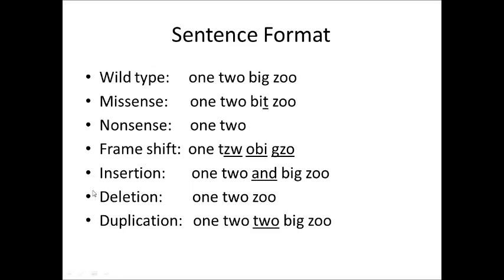Let's look at an insertion mutation. The sentence reads: one, two, and, big, zoo. Where did 'and' come from? We just inserted it. Notice it's a triplet — a codon — and it does not affect anything downstream. 'Big zoo' is still fine. We just inserted a new triplet, making a new part of the sentence without disrupting what was already there.